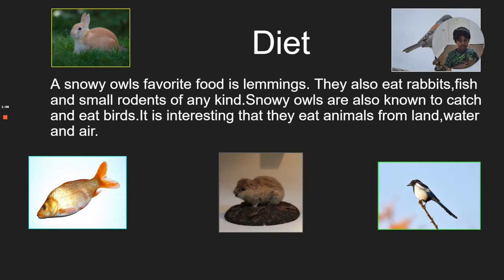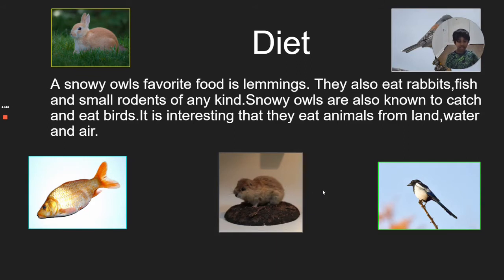Now this is the diet of a snowy owl — what they eat. Snowy owls' favorite food is lemmings. Lemmings are small little creatures. If you want to see a lemming, you can look at the middle area of the slide. They don't just eat lemmings; they also eat birds, rabbits, and fish. It is interesting that snowy owls eat animals from land, water, and air.